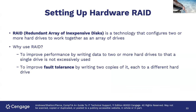RAID — Redundant Array of Inexpensive Disks — though 'inexpensive' is relative; it always hurts when you have to replace one. RAID is a technology that configures two or more hard drives to work together as an array. The two main reasons: performance and fault tolerance. Performance comes from spreading data across drives (striping). Fault tolerance comes from mirroring drives — if one hard drive fails, the other keeps running.